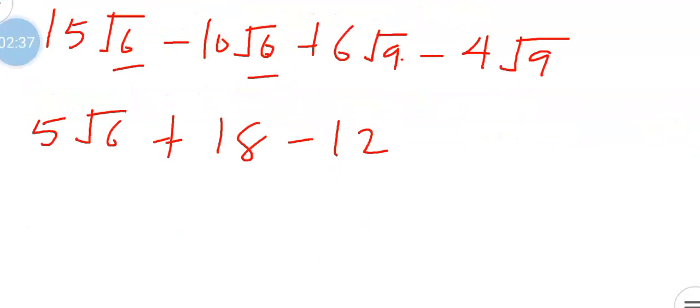So from here now, we have 5√6. Now 18 minus 12, that will give us 6. So the answer is 5√6 + 6.